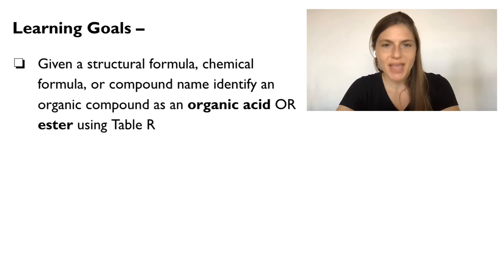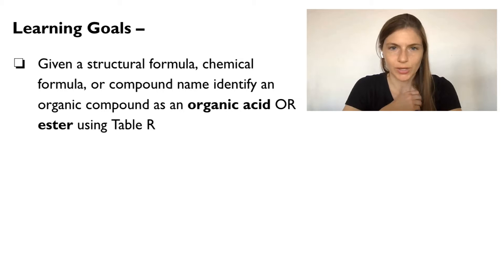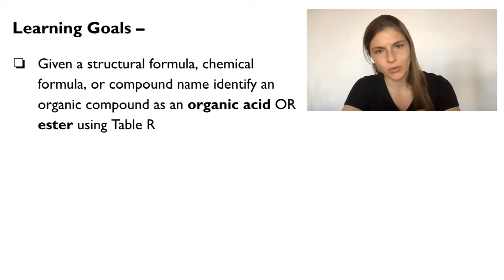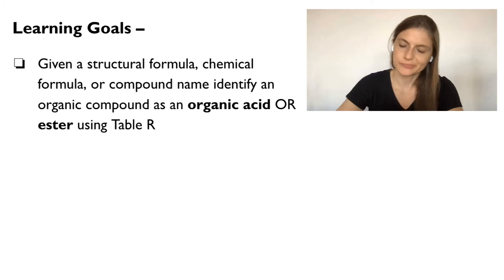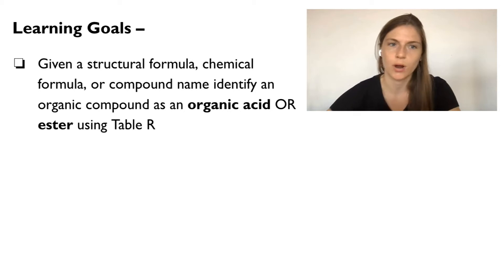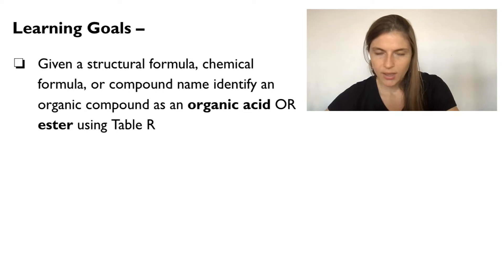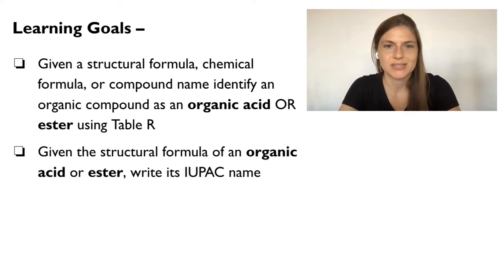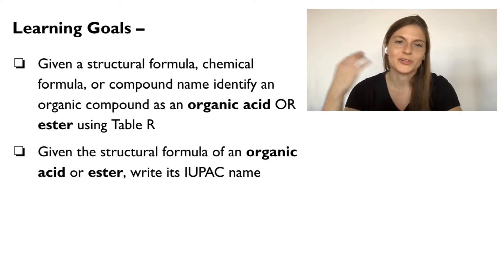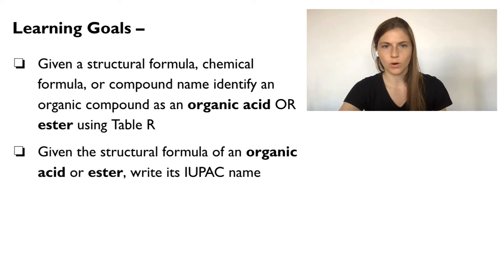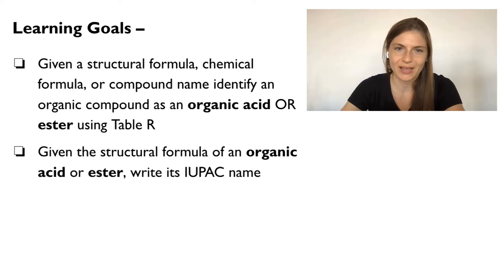Hello chemists, my name is Kim and today we are going to be talking about how to identify and name organic acids as well as esters when we are looking at structural formulas, chemical names, and chemical formulas. You're going to be using Table R of your New York State reference table if you are preparing for the New York State Regents exam, and we are also going to practice how to either take a structural formula and write the name, or write the structural formula given the name of an organic acid or an ester.